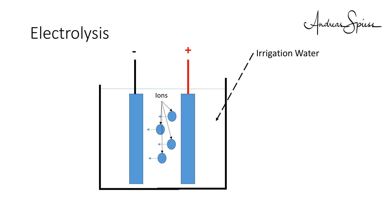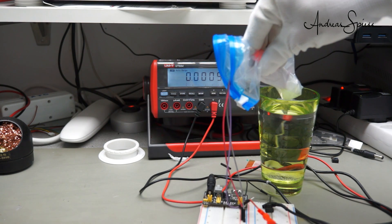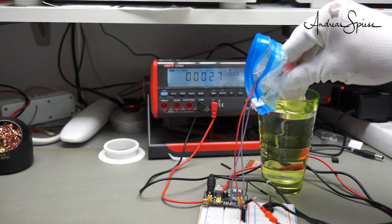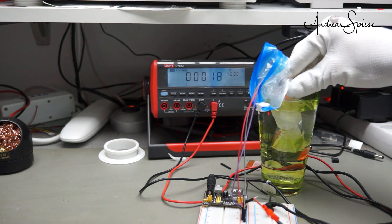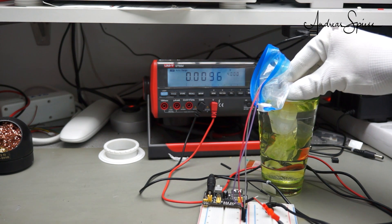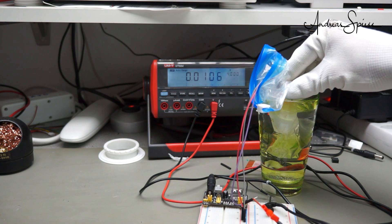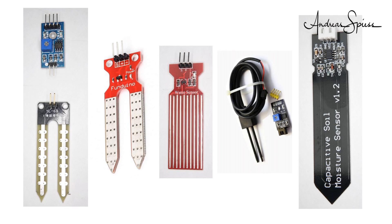The same happens again if you replace it. It is not a quality issue. It happens because of the water and the DC current. To prevent this from happening, we could isolate the electrodes from the water. If we do so, the sensor does not work at all. So, this is not the solution. The only solution for me is to avoid these sensors.